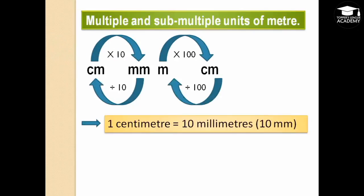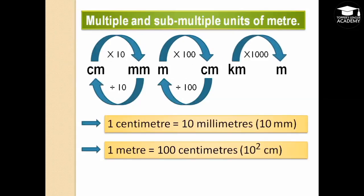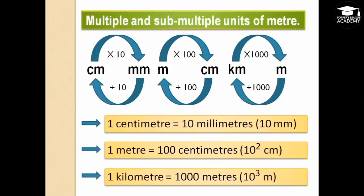When moving from left to right we are increasing by a power of 10. 1 kilometer equals 1000 meters, and 1000 meters equals 1 kilometer. So moving from left to right increases by the power of 10, and moving from right to left decreases by the power of 10.